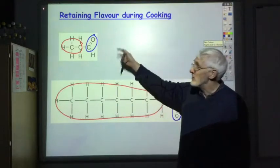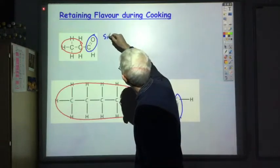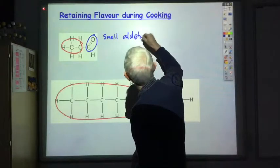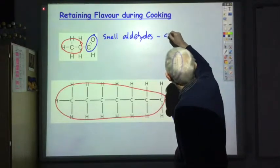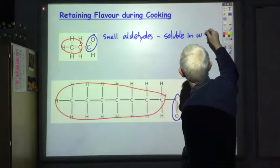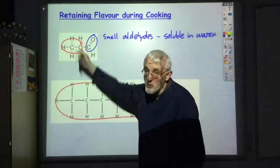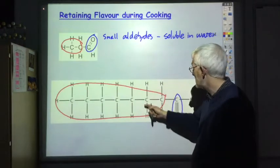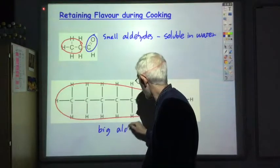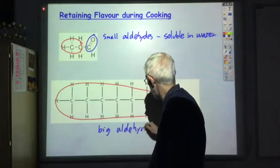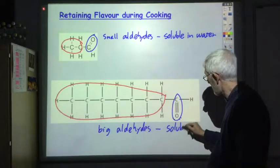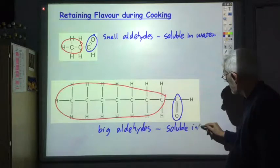So because this is relatively polar compared with this one, it tends to be more soluble in water. So small aldehydes tend to be soluble in water because they've only got a small non-polar part, whereas big aldehydes tend not to be soluble in water, so soluble in non-polar solvents.